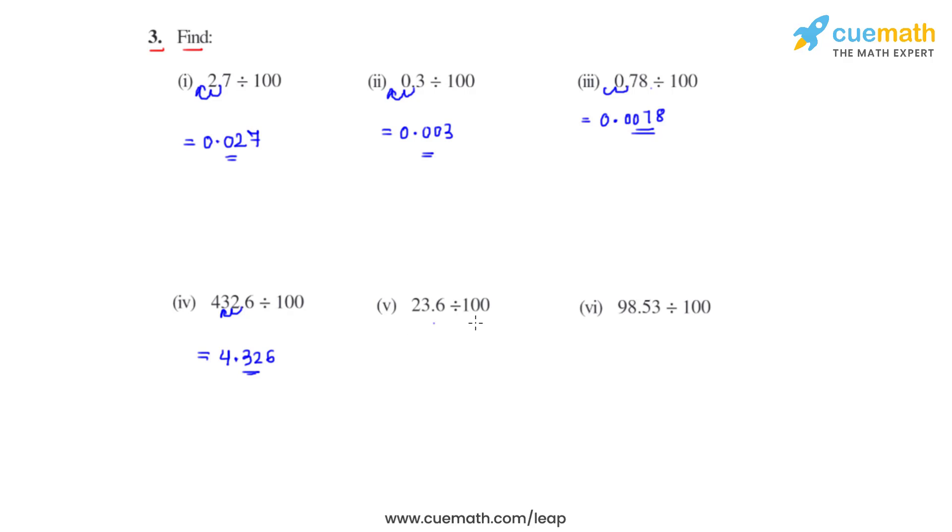Coming to the fifth bit, we have 23.6 which is divided by 100. Moving the decimal two places towards right gives us the answer as 0.236. Coming to the last part, which is the sixth part of this question, we have 98.53 which is divided by 100. So we move the decimal two places towards right and the answer that we get is 0.9853. And this is how we solve this problem.